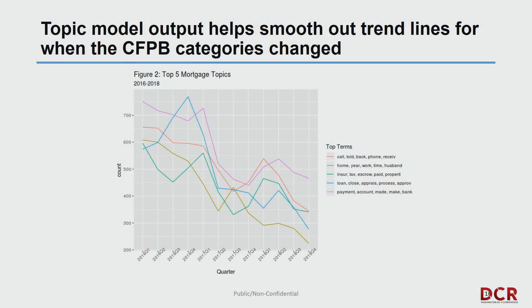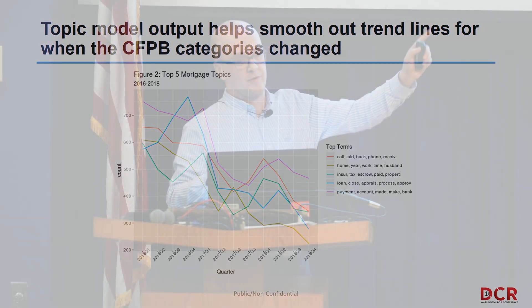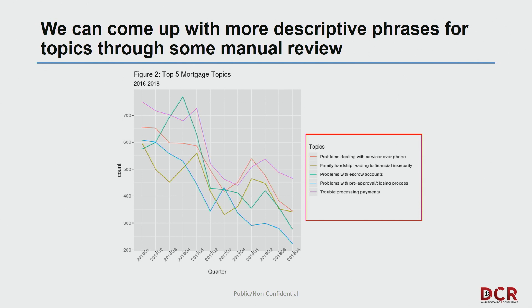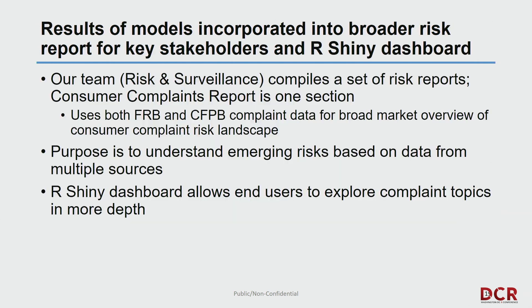The result for mortgages shows a similar trend line — things are going down — and the top terms are just words, but compared to the previous time series it's a better measure. With some manual review you can get phrases that fill in what those terms mean. These results are incorporated into a broader risk framework for our team — we have risk reports to understand emerging risks in consumer financial products, even for products or institutions the Fed doesn't directly oversee. Our stakeholders include the division director and sometimes the board of governors.